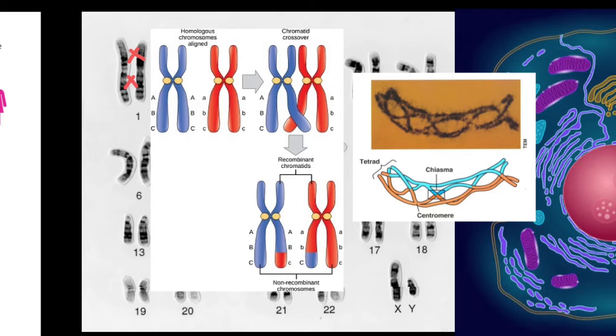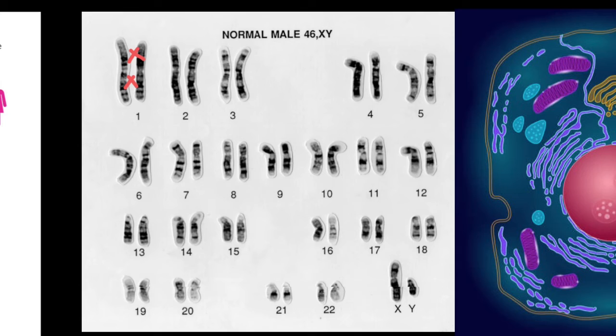This is actually what happens: all four chromatids participate in recombination, and the same is true for any other autosomal chromosomes.